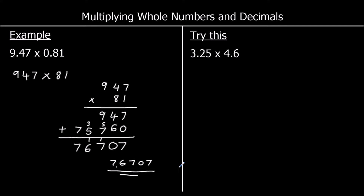Here's a question for you to try: 3.25 times 4.6. Give it a go and carry on when you're ready. We change the question to 325 times 46 — we've multiplied by 10 three times in total — so we'll divide by 10 three times at the end.